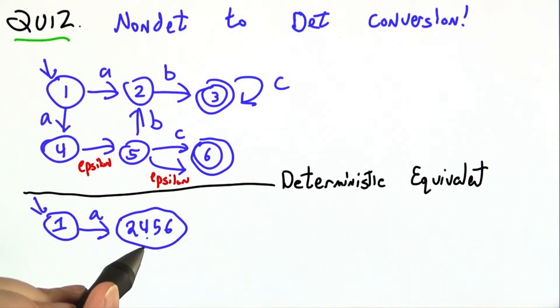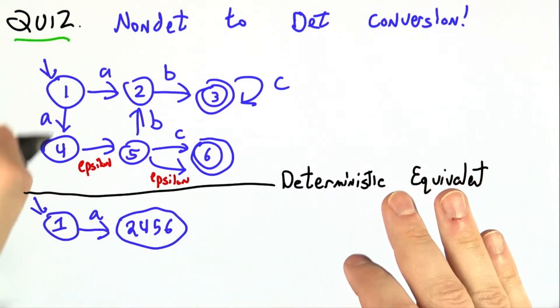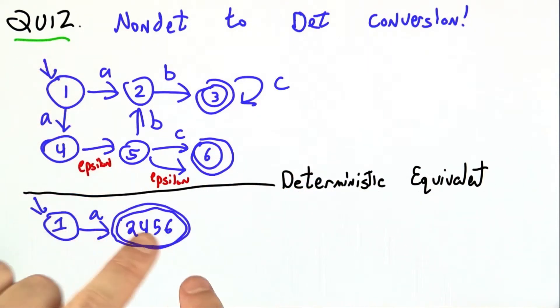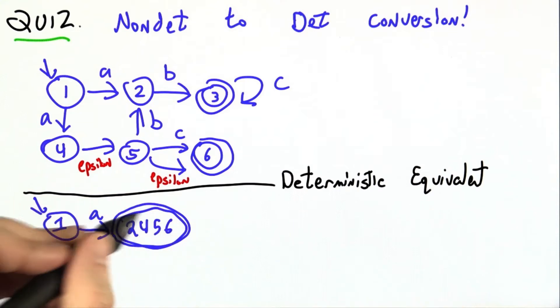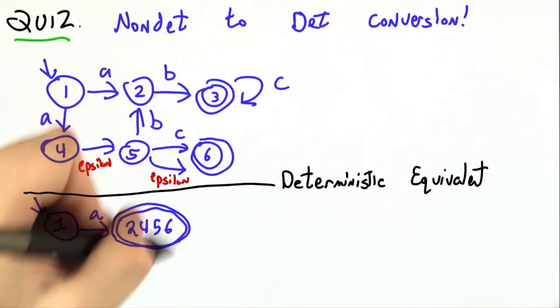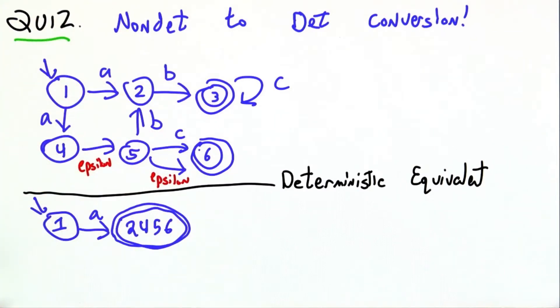Now should this state be an accepting state or not? Well, remember that a finite state machine accepts if there's any path to an accepting state, and 6 is one of our accepting states, because the original machine could accept A, A, epsilon, epsilon. We want our new machine to also accept A, A. So in my converted world, the state accepts if any of its corresponding original states also accept.